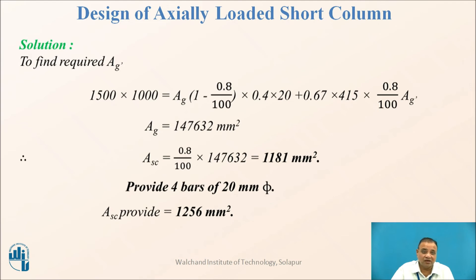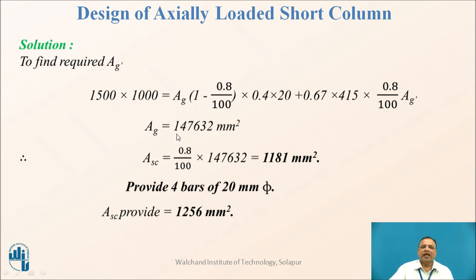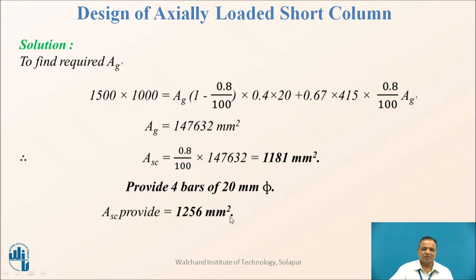Therefore, there is no need to provide 0.8% of the actual provided area. We need only 0.8% of the required area of 147,632 mm², which gives 1181 mm². Providing 4 bars of 20 mm diameter yields an area of steel of 1256 mm², which is greater than 1181 mm². Therefore, it is safe.